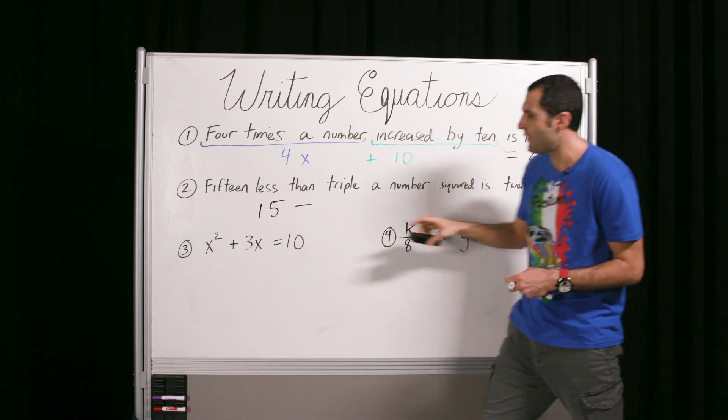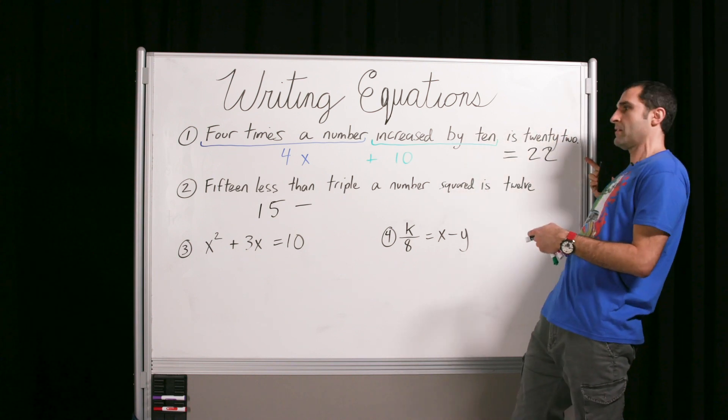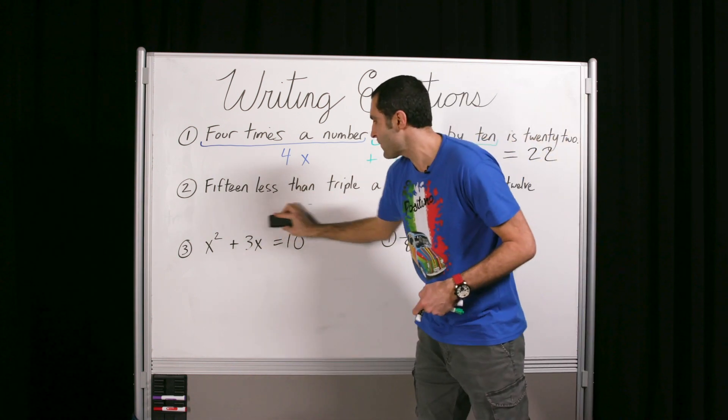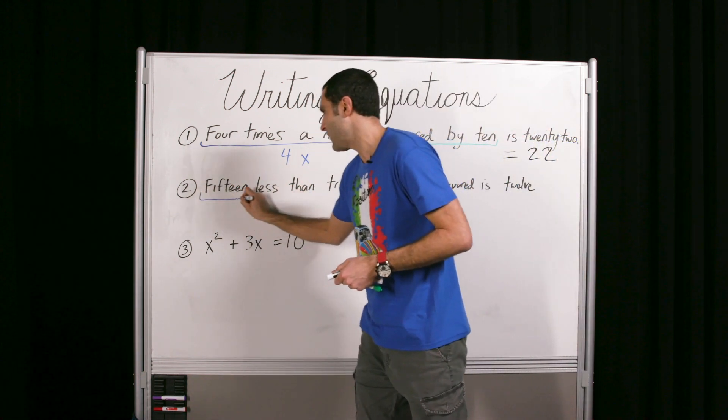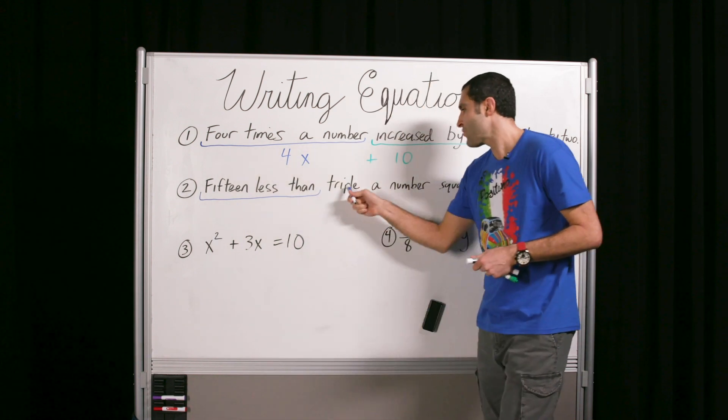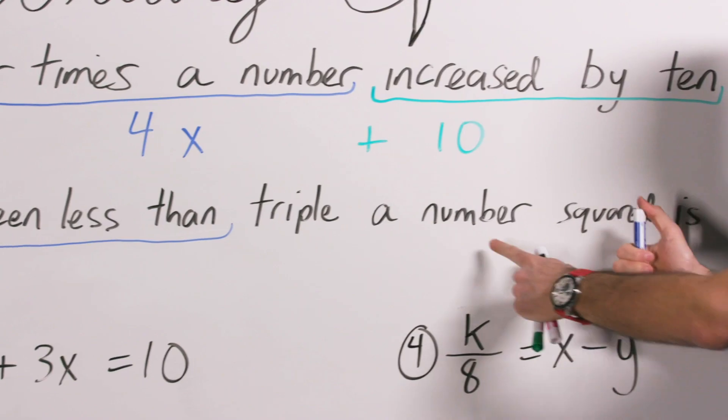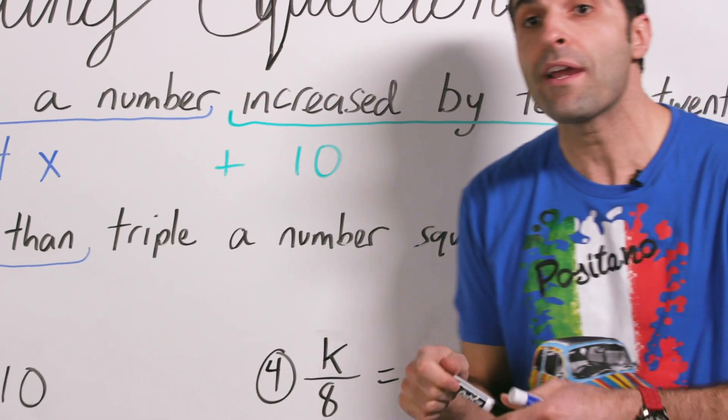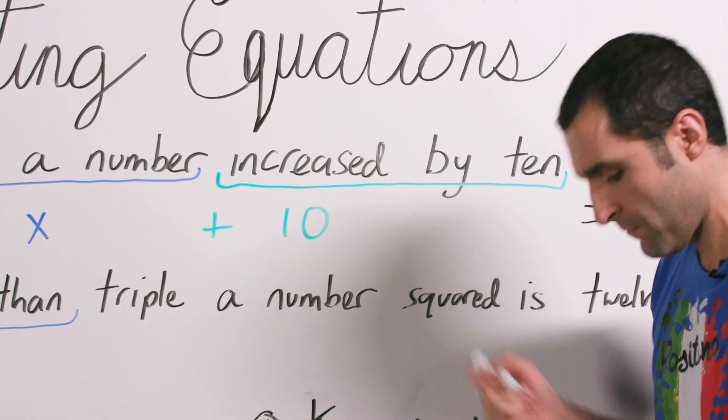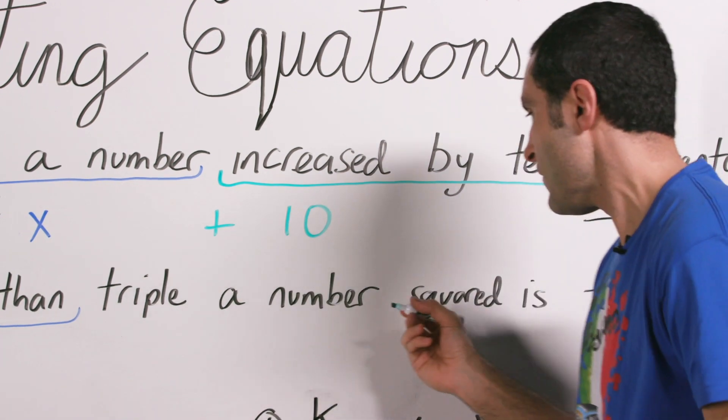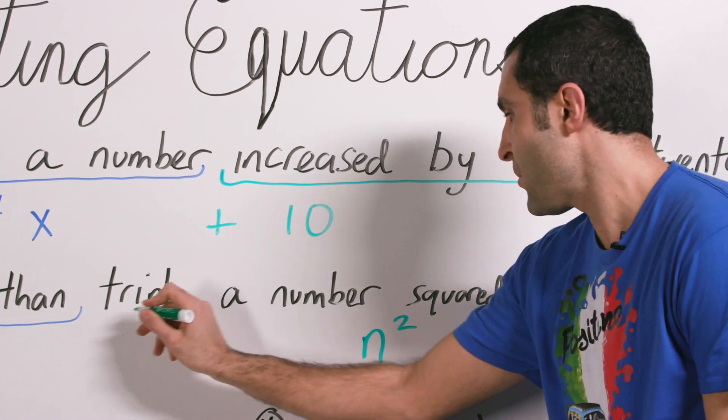So when you say 15 less than, you have to have a little foresight and patience to say, all right, we're going to move the 15 to the end and say, whatever we do, we're going to do some math and we'll do 15 less than that thing. So try not to be tempted to just translate directly every single time like we did here. So we'll come back to the 15 less than. In fact, we'll put it in blue so that we'll keep track of it. Triple a number squared. So the number is being squared. What does squared mean? It means multiplied by itself. So let's put that in green maybe.